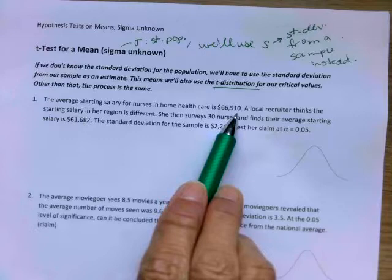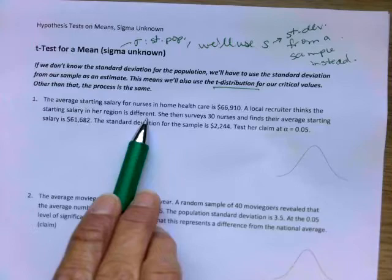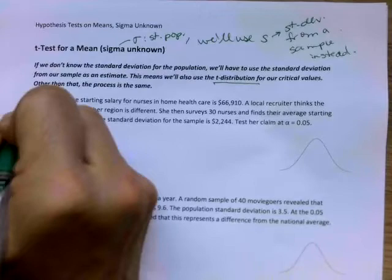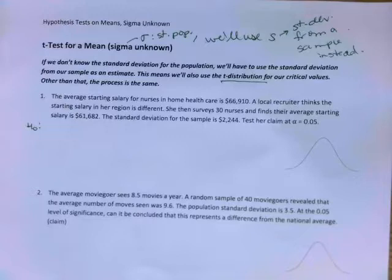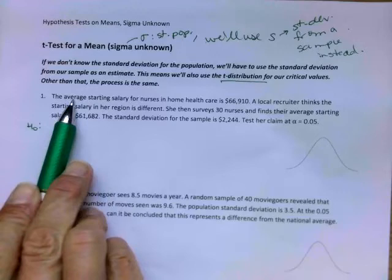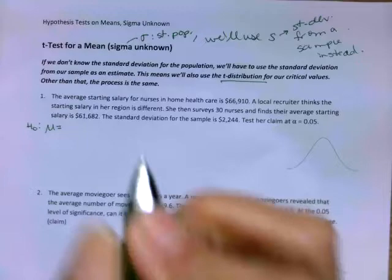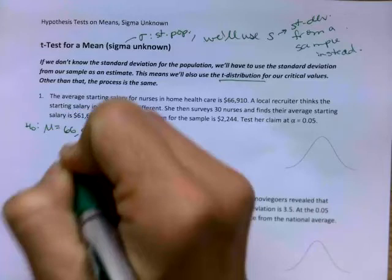Okay, so first example. Average starting salary for nurses is $66,910. Local recruiter thinks the starting salary in her region is different. Stop. Those are your two hypotheses. So let's go ahead and write those down. So the first thing we do is we write our hypotheses. So the null hypothesis, H sub zero. And we're talking about averages, so that means my parameter is mu. So 66,910.